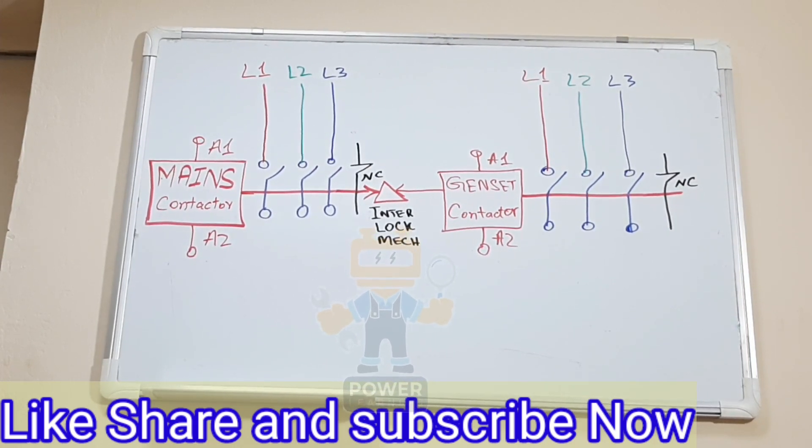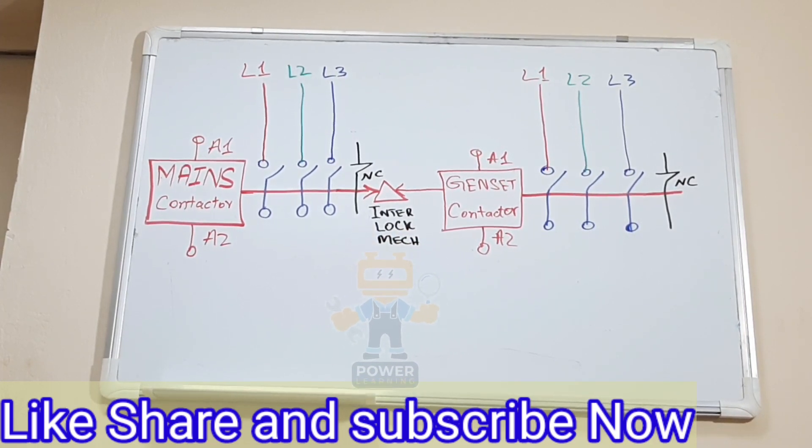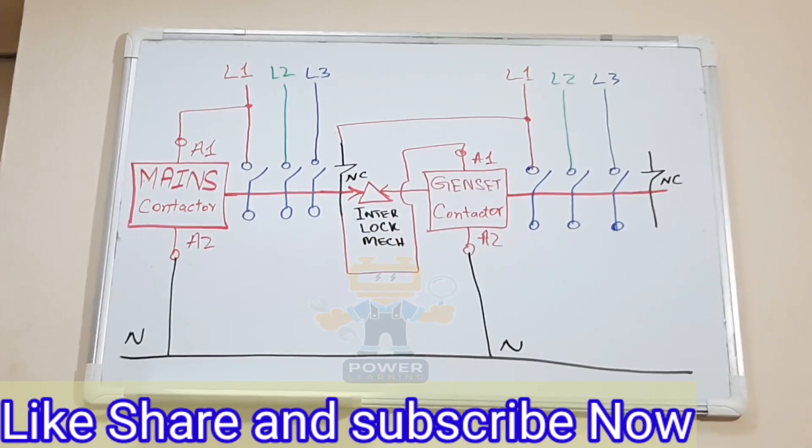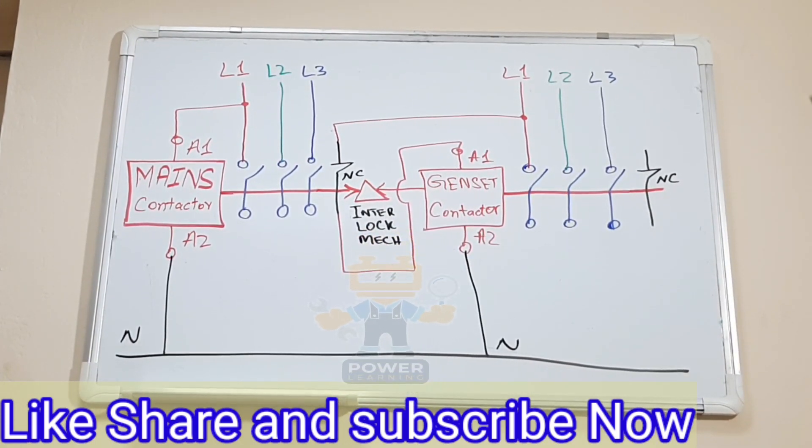In the center we are using mechanical interlock. There is no need for any timer or relay, we will use only two contactors. Now you see I connect line one from the mains power directly to the A1.